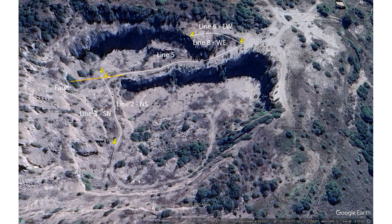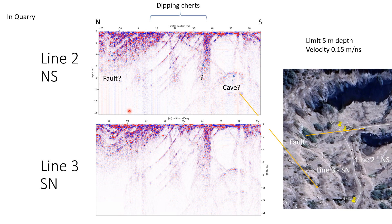Looking at lines two and three — exactly the same line — I've swapped line three so both are oriented north to south. As a first pass, both lines look pretty similar. We played around a bit with the antenna height. The first thing I seem to see are these dipping layers in the middle between 10 and 30 meters along the profile. Given the interbedded chert and dolomite, I think these are chert layers dipping down. The question is what's going on at the beginning — this might be the fault we're seeing, with these different layers.